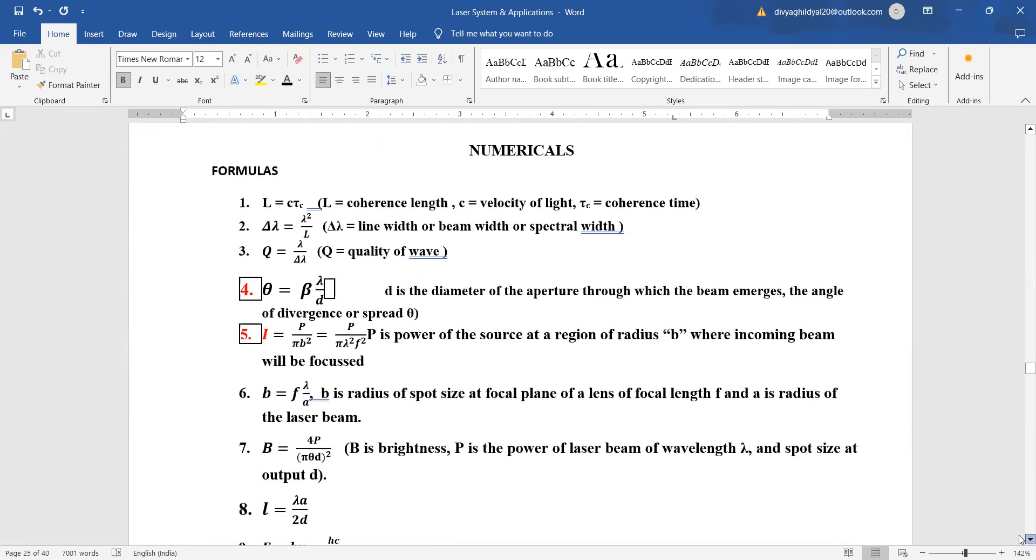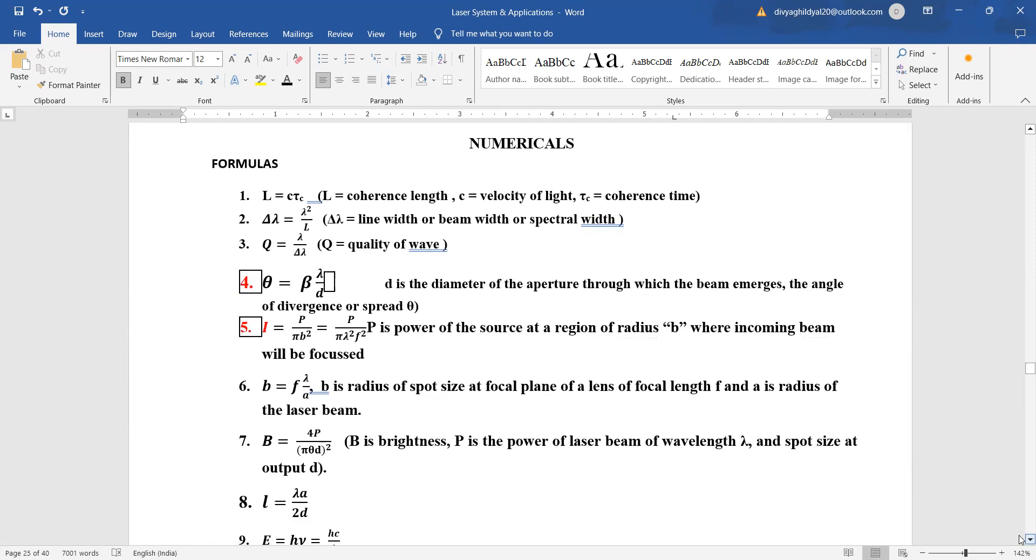Now we will attempt numericals from previous year papers. Before starting, let us quickly revise the formulas. Coherence length is equal to c times tau c. Line width is equal to lambda square upon l. Quality of wave is equal to lambda upon del lambda. The angle of divergence is equal to beta times lambda by d. Usually for numericals, you only use lambda by d.